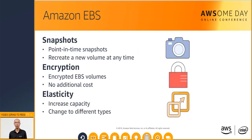To provide an even higher level of data durability, Amazon EBS gives you the ability to create point-in-time snapshots of your volume. AWS allows you to recreate a new volume from a snapshot at any time. You can share or even copy snapshots to different AWS regions for greater disaster recovery protection — for example, sharing snapshots from the Singapore to the Tokyo region. You can also have encrypted EBS volumes at no additional cost. Encryption occurs on the EC2 side, so data moving between the EC2 instance and the EBS volume within AWS data centers will be encrypted in transit.